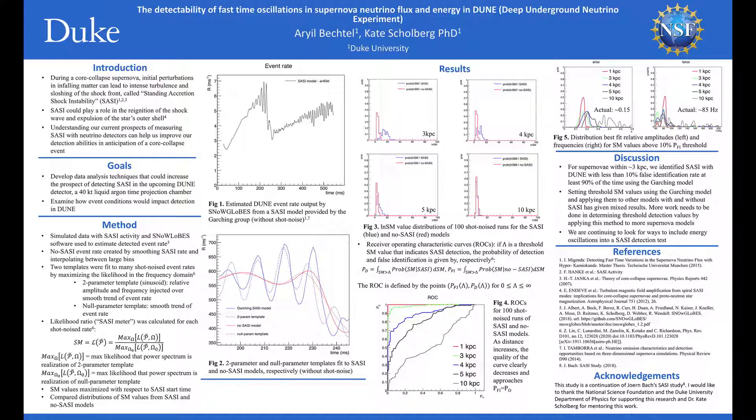Because SASI causes a time-dependent change in neutrino number flux and neutrino energy, we may be able to detect it with neutrino detectors on Earth. SASI could play an important role in the re-ignition of the shock wave and expulsion of the star's outer shell, a poorly understood process.